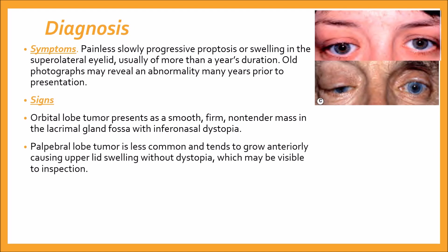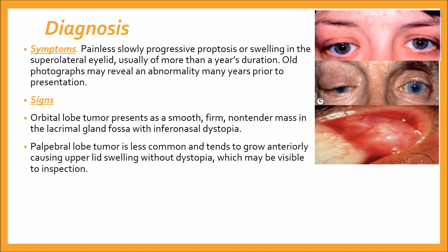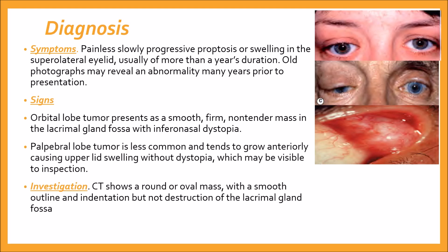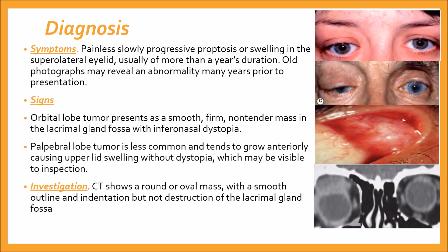There is no dystopia in the palpebral lobe tumor and it is easily seen on inspection upon lid eversion. On imaging, CT shows a round or oval mass with a smooth outline and indentation but not destruction of the lacrimal gland fossa, with the right side showing an orbital lobe lesion.